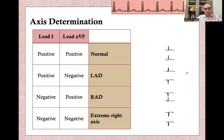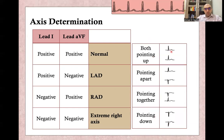The other way is to choose lead I and lead aVF and check their deflections. If both lead I and aVF are upright, this is normal axis. If lead I is positive and lead aVF is negative, this is left axis deviation. If lead I is negative and lead aVF is positive, this is right axis deviation. If both lead I and aVF are negative, this is extreme right axis deviation. So: both pointing up — normal axis; pointing apart — left axis; pointing together — right axis; both pointing down — extreme right axis.